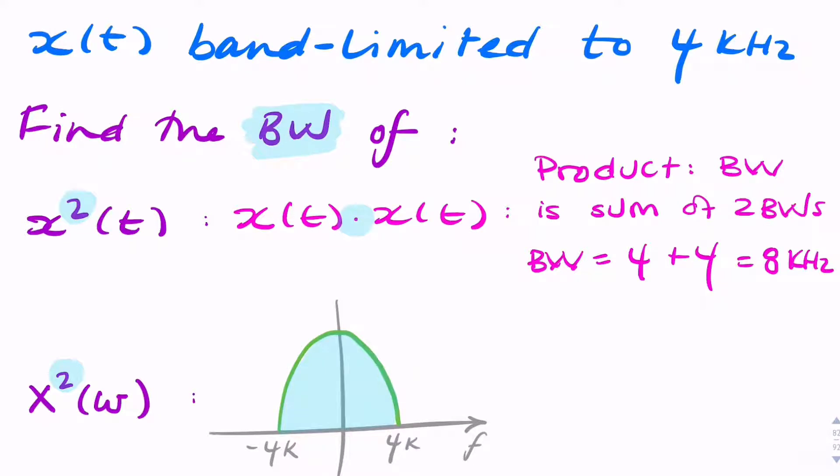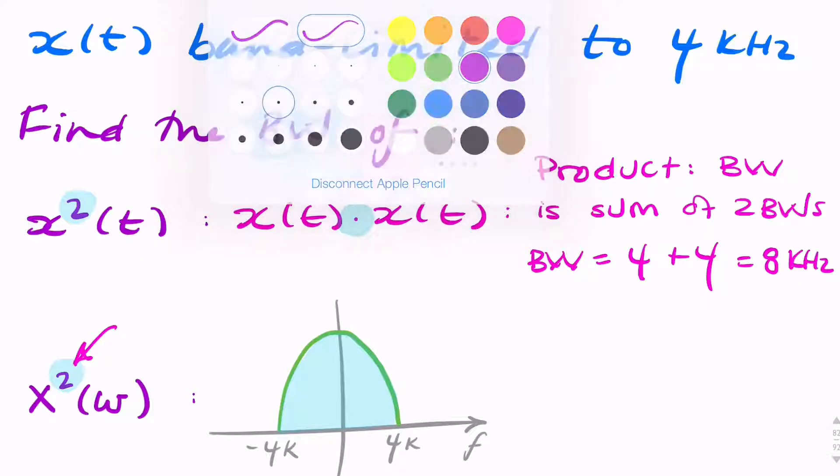Slightly less obvious is what happens if you square the spectrum. So if we take the spectrum here and square that, multiply it by itself, what would happen? Well, let's consider what would happen.